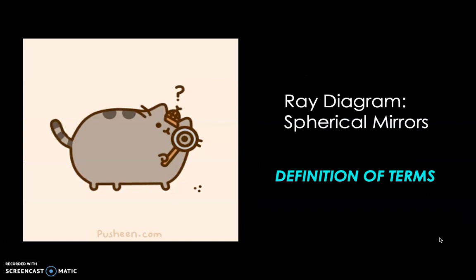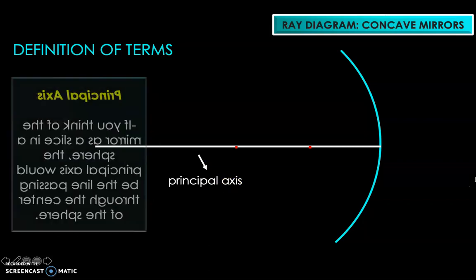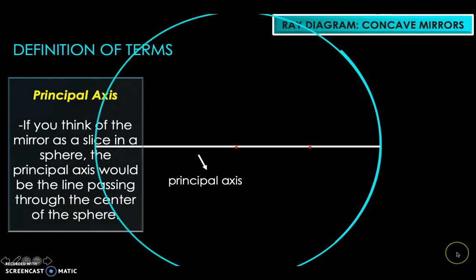For the ray diagrams for spherical mirrors, we need to define a couple of terms to easily discuss this topic. The first term for the ray diagram in concave mirrors is the principal axis. If you think of a mirror as a section of a sphere, the principal axis is the line passing through the center of that sphere.